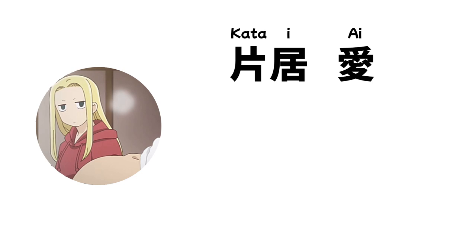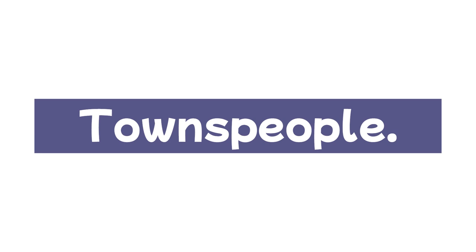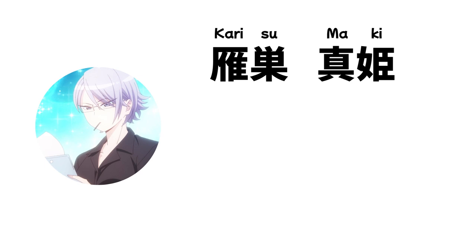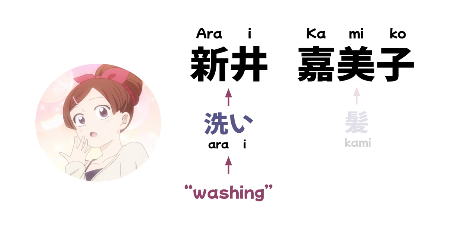Moving on to townspeople. Komi-san's hairstylist is Karisu Maki, whose name comes from the English word 'karisuma,' or 'charisma,' because she is so charismatic — at least according to her assistant and protégé Arai Kamiko, whose only job for now is washing customers' hair, making her name very amusing: 'Arai' means 'washing' and 'Kami' means 'hair.'